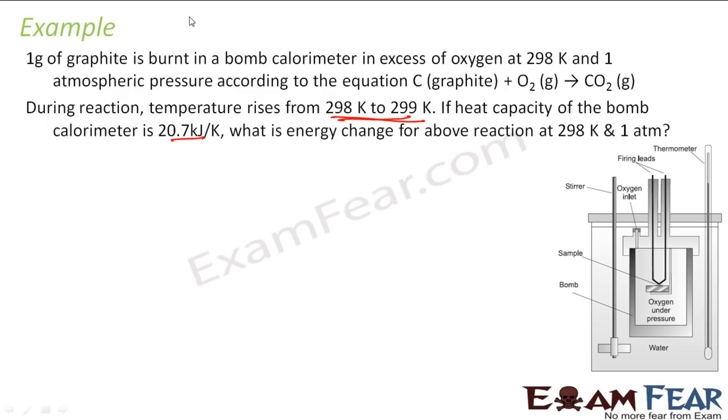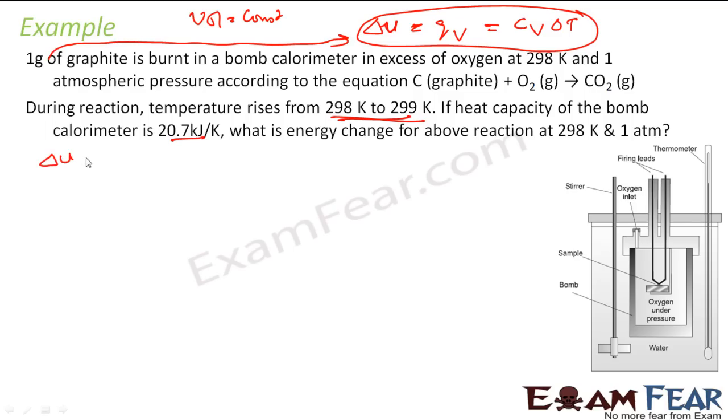So, see there is a bomb calorimeter so my volume is constant. So I am talking about delta U. That is nothing but Q supplied at constant volume. That is nothing but Cv delta T. But this delta U which I am going to find will be for 1 gram of graphite. Please note. So, I will write delta U for 1 gram of carbon equals QV. That is nothing but Cv delta T. That is nothing but what is the value of Cv? It will be 20.7 kilo Joule per Kelvin into delta T is 1 Kelvin, 1 Kelvin.